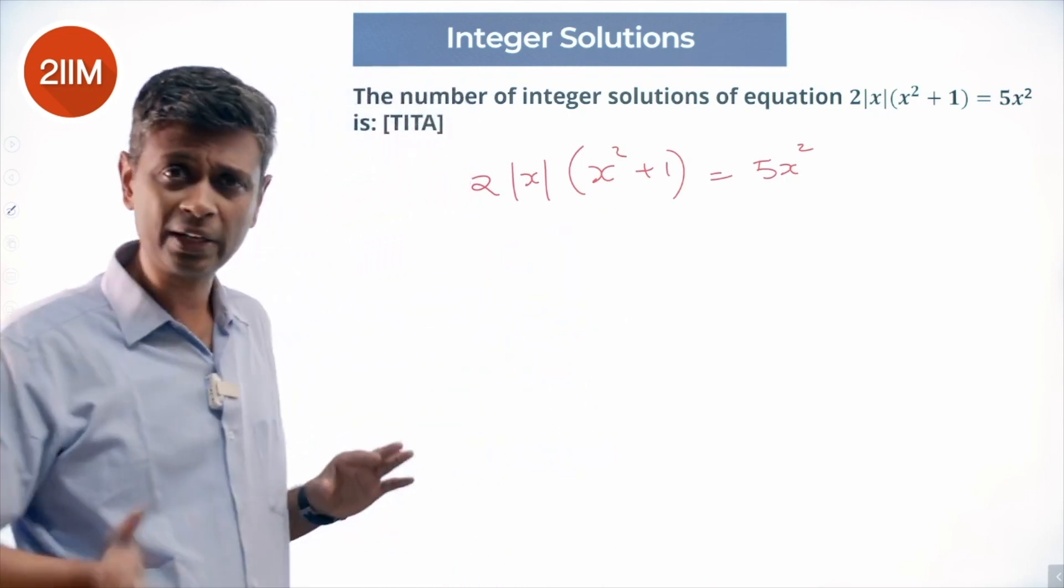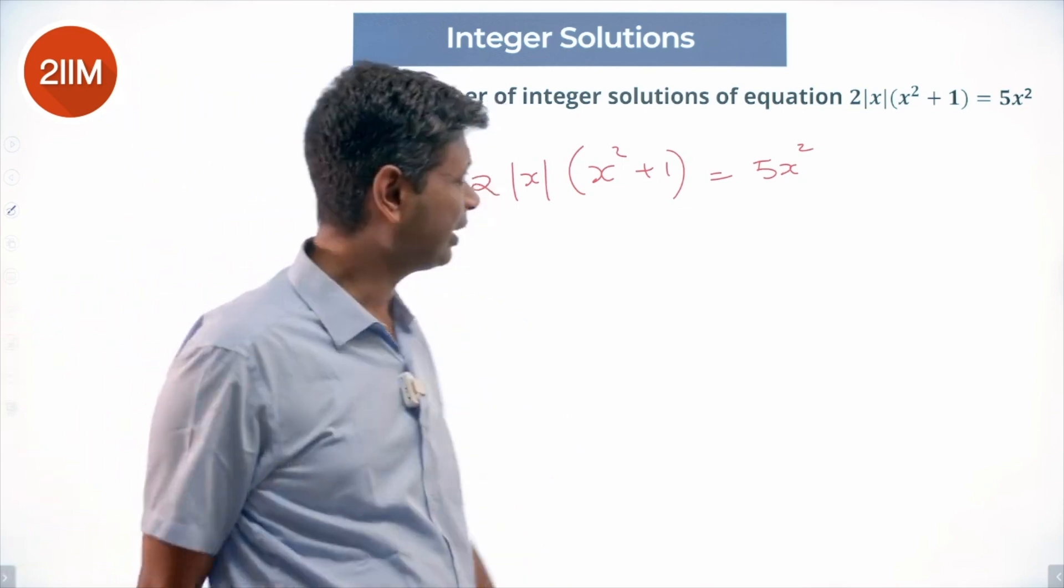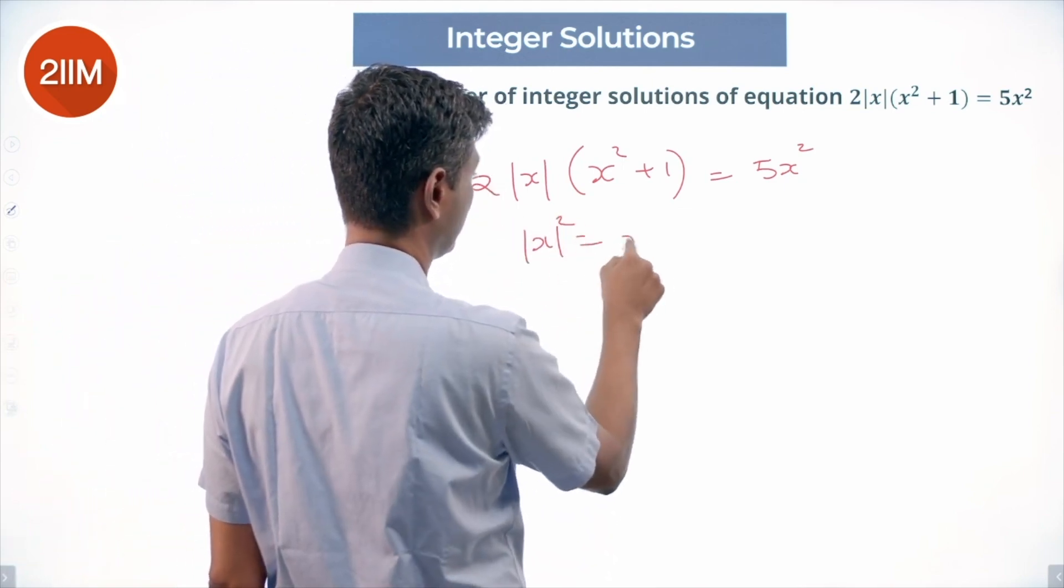We can treat this as a quadratic in |x| or an equation in |x|. That way we can cancel everything merrily. Understand that |x| whole squared is nothing but x².